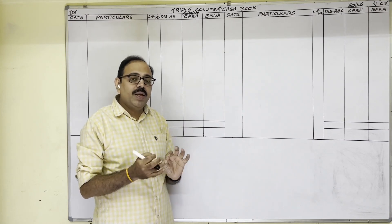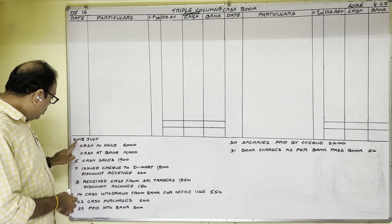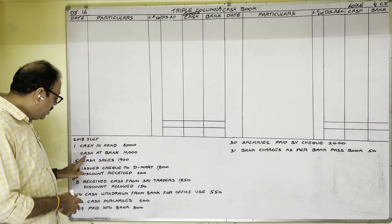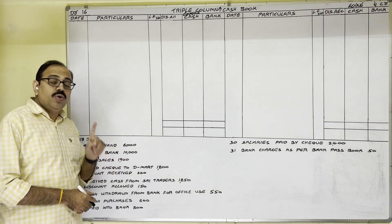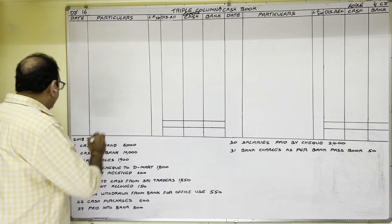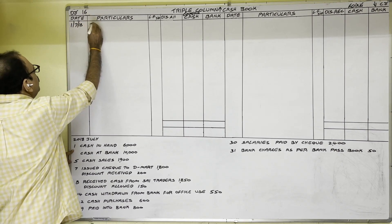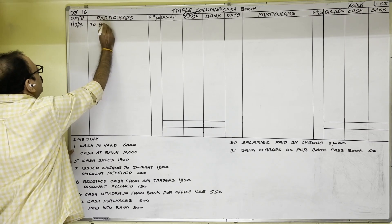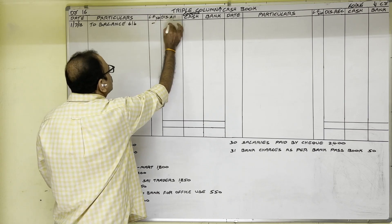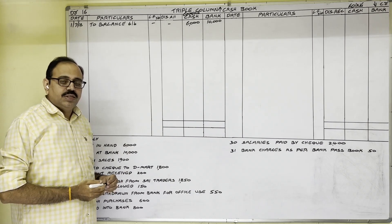Now we write the opening balances for the 16th question. 1st July 2018: cash in hand 6,000 and cash at bank 10,000 — these two are opening balances. Since assets show a debit balance, we write balance brought down on the debit side: 6,000 rupees in the cash column and 10,000 rupees in the bank column. The remaining entries are transactions.